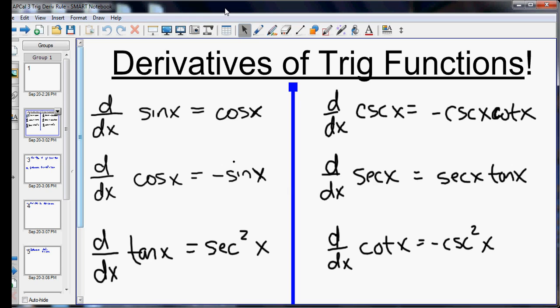Also if you notice, all of those that start with a c, the derivative of cosine, the derivative of cosecant, the derivative of cotangent, all those derivatives begin with a negative. So if the original function starts with a c, its derivative will be negative.